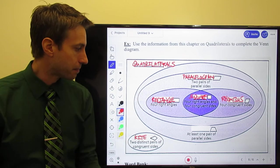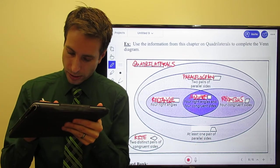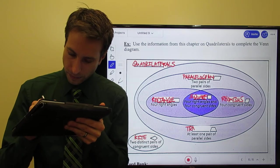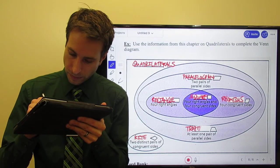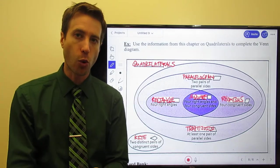Then, the last one, we just talked about trapezoids. Now, of course, trapezoids are quadrilaterals.